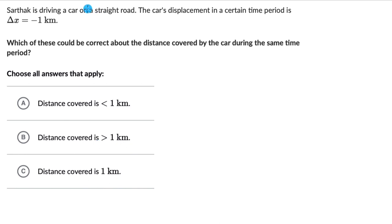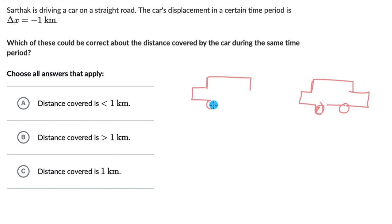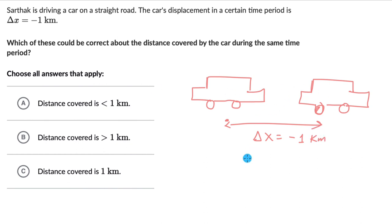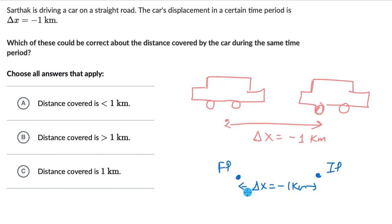Sarthak is driving a car on a straight road and the car's displacement is minus 1 kilometers. Let's try to draw this. Here we have the car, and the displacement delta x is given to be minus 1 kilometers. If we try to represent the car as a point object, we can say the initial position is over here and the final position is here. The displacement is minus 1 kilometers. This displacement really tells us the shortest distance between any two points.